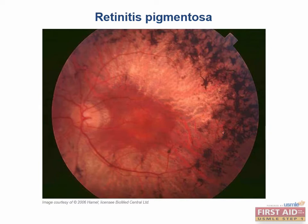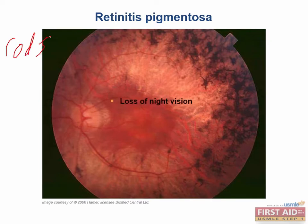Retinitis pigmentosa is one of the most common inherited forms of blindness as a result of retinal degeneration. Although there are many different gene mutations that can result in the retinitis pigmentosa phenotype, this disease typically affects rods first. That is why patients typically present with loss of night vision, which is usually a very good clue to point you towards retinitis pigmentosa on the board exam.